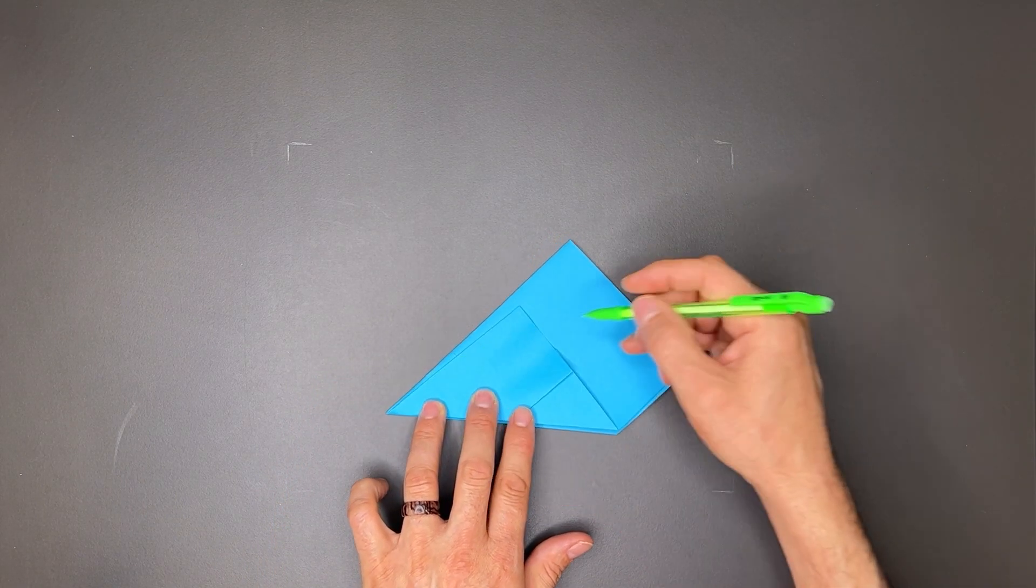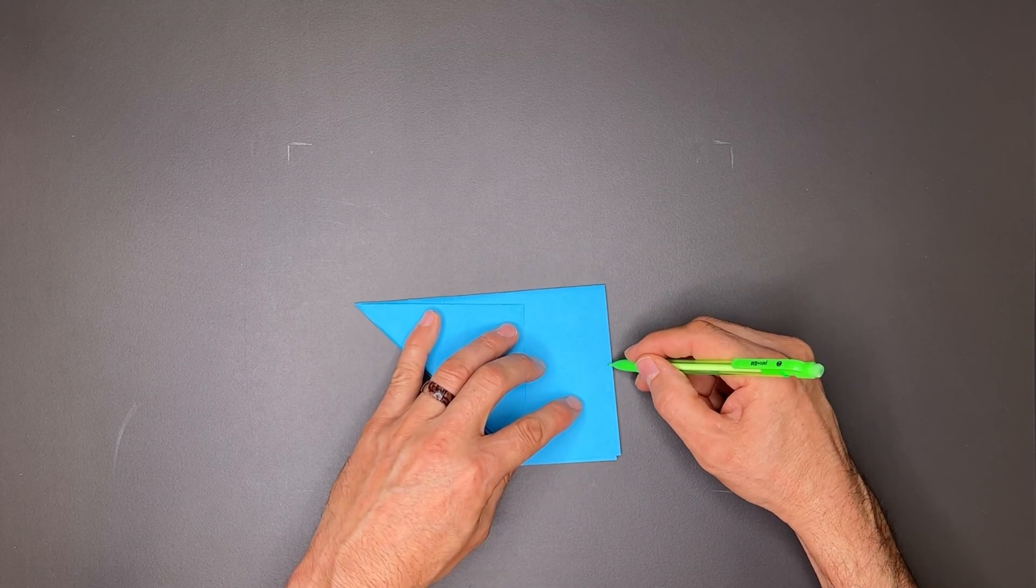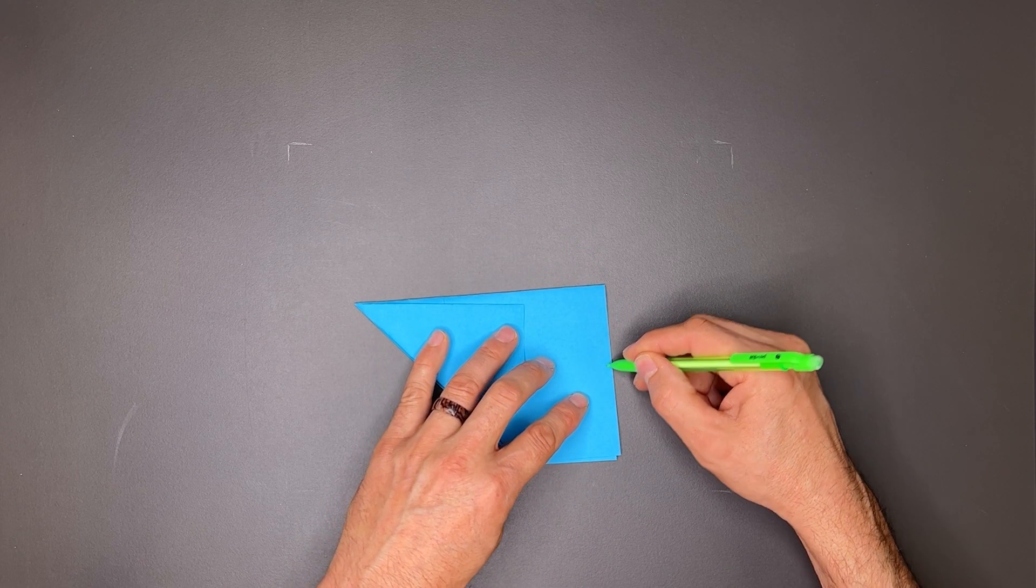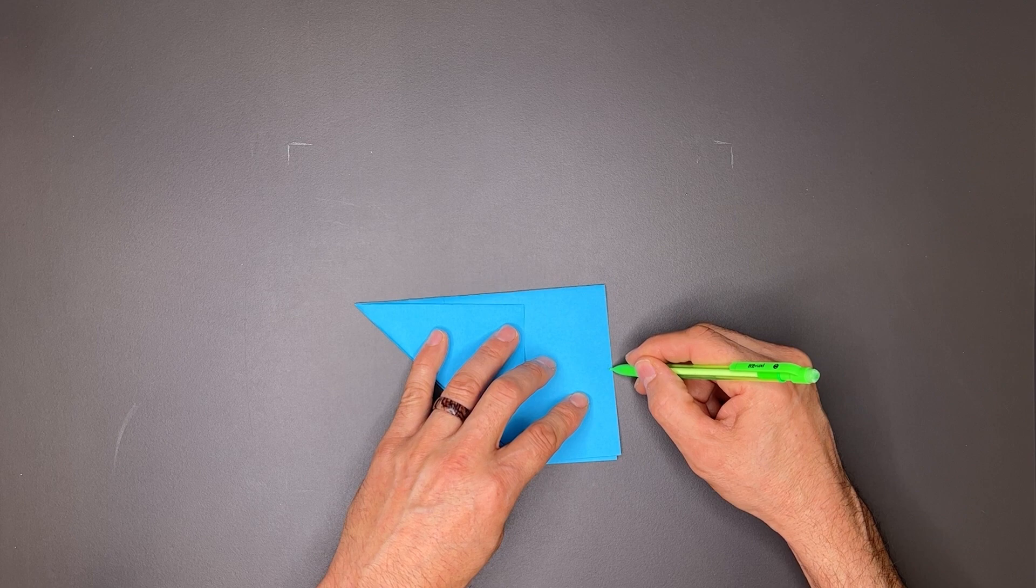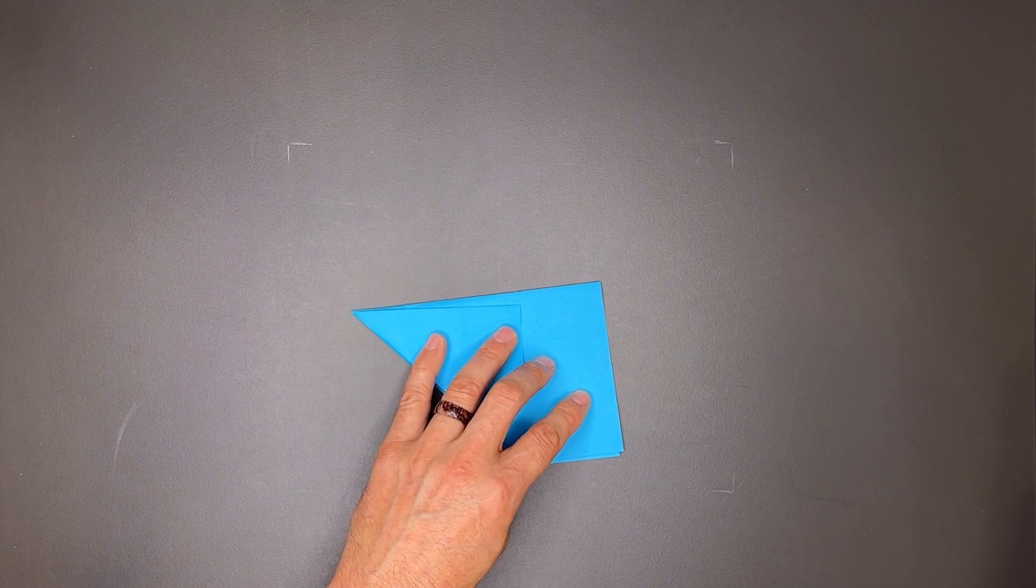Now I want to crease from the tip just about halfway. So if this is the halfway mark with the back edge here, I want to go down just a little bit. I'll make a mark there so you guys can see it on camera.